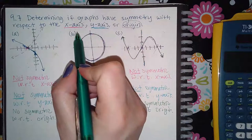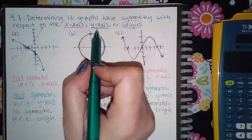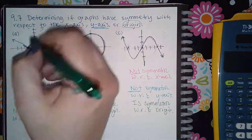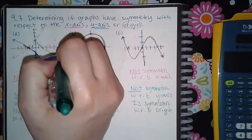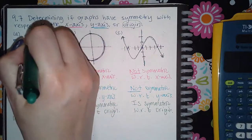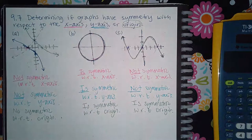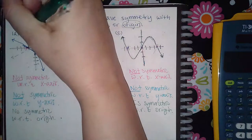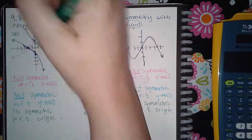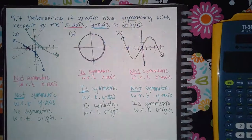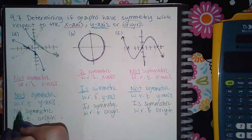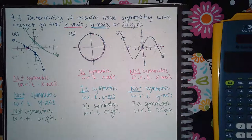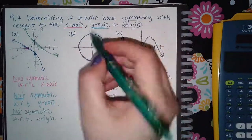Now that I've flipped it over the x-axis, I still have to flip it over the y-axis. I take what is on the left and flip it over — now I can make it solid — and then what is on the right gets flipped over and becomes solid too. Does this solid green graph land on the original? It does not, so this is not symmetric with respect to the origin.